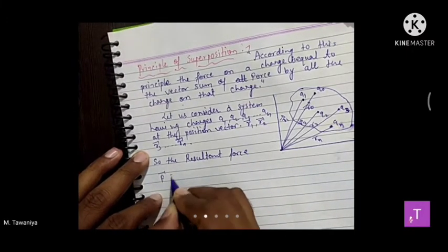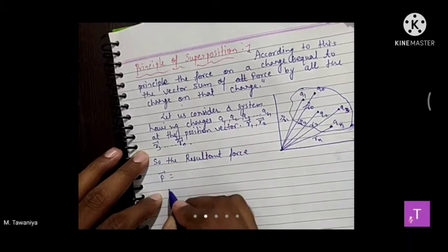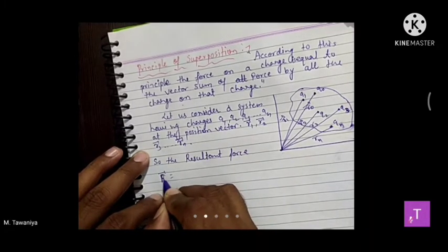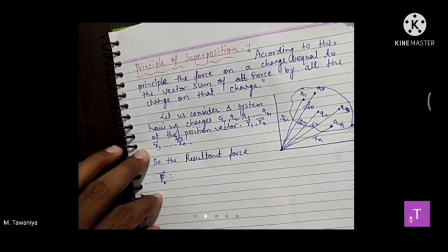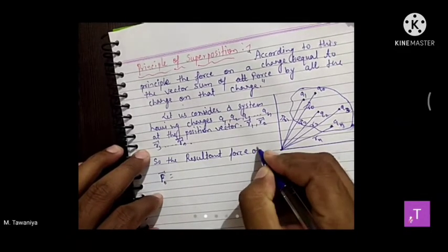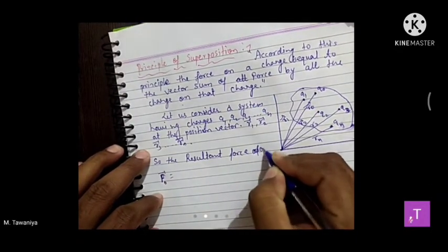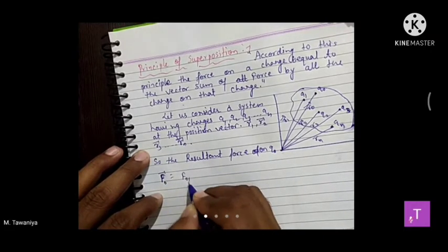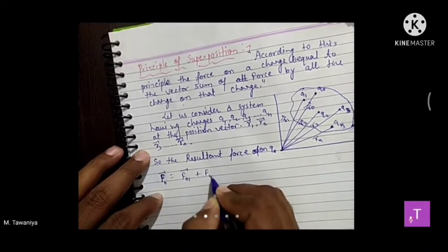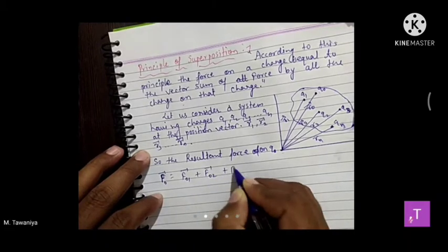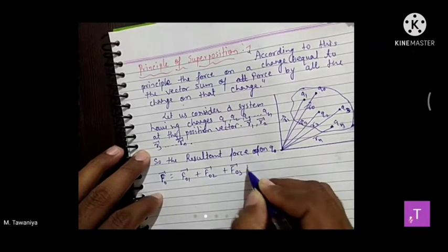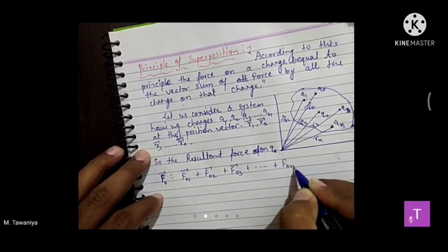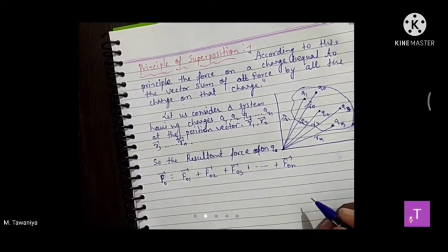F0 (resultant force on q0): F01 vector + F02 vector + F03 vector + ... + F0n vector। सभी का vector sum करेंगे।